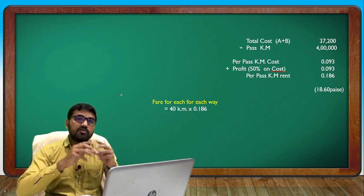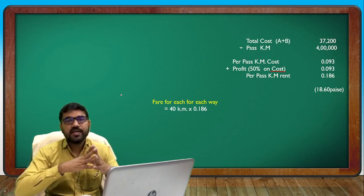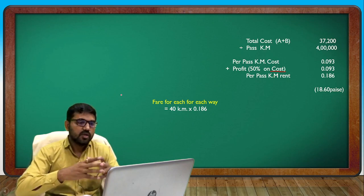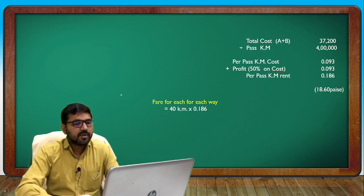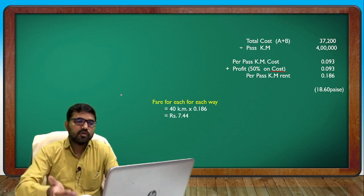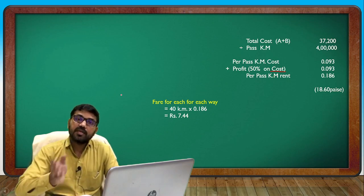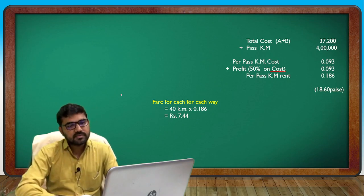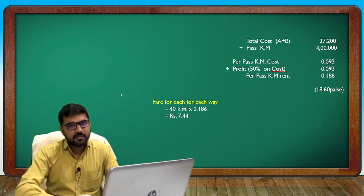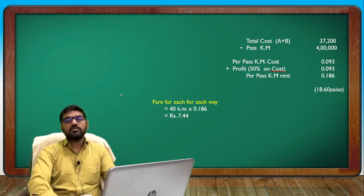1 passenger for 1 km, fare by km at 40 — so the fare works out to 0.186 per passenger kilometer, giving approximately 18.0 for the bus route.